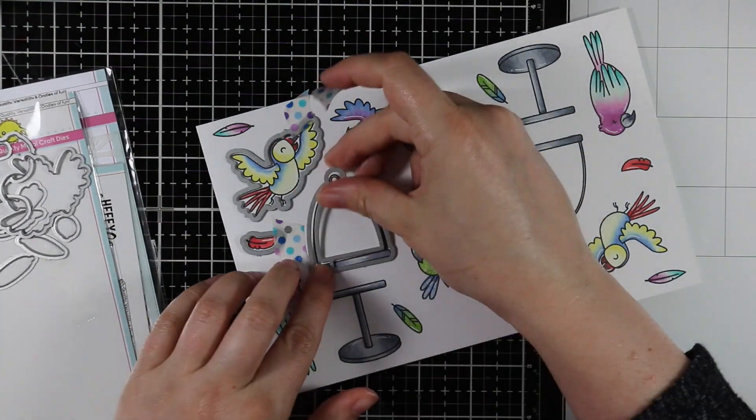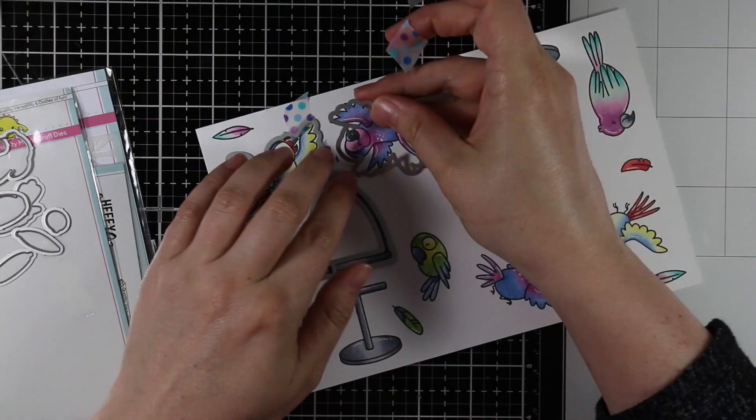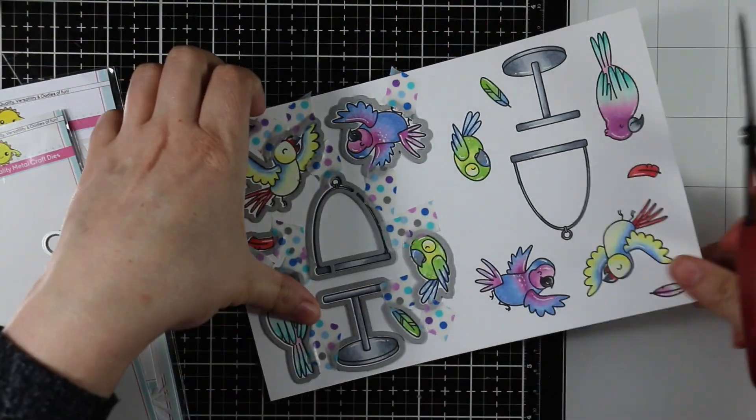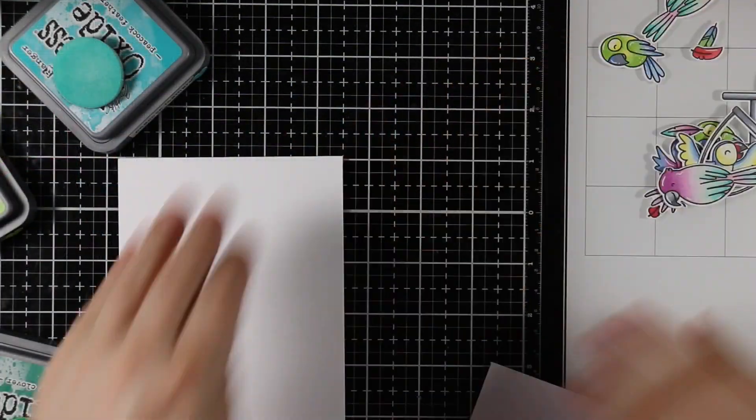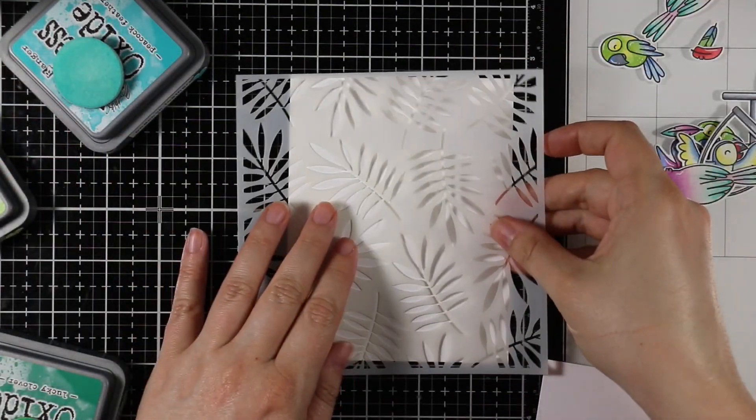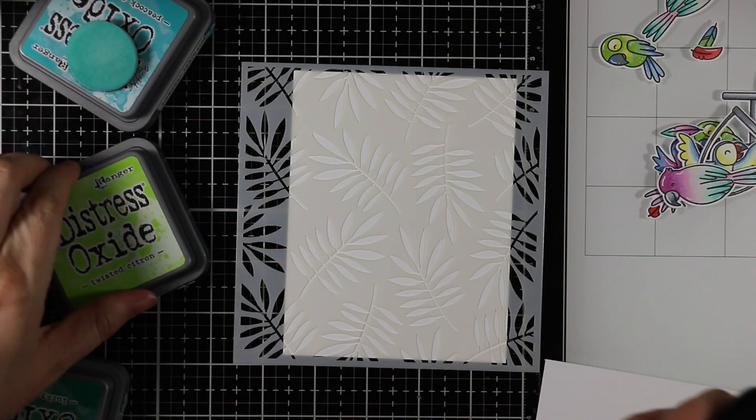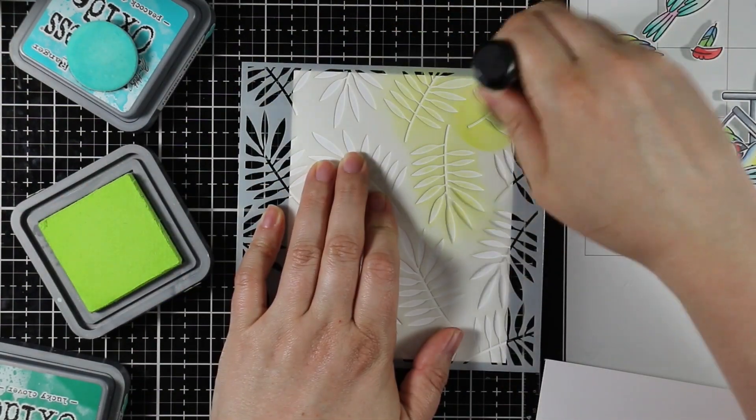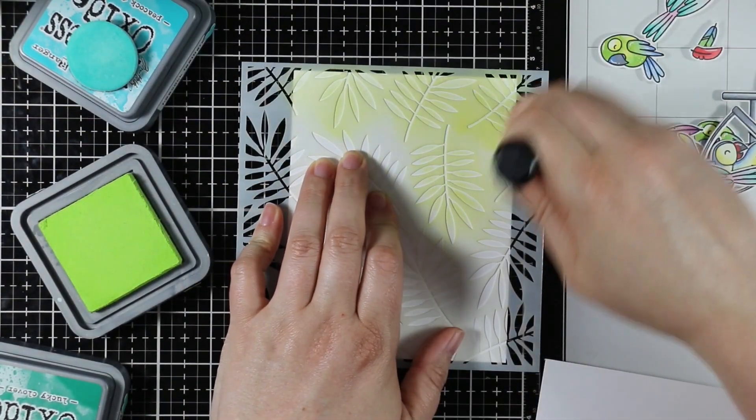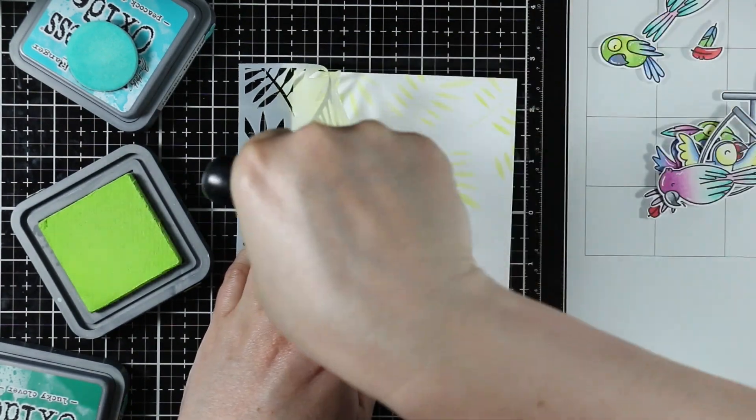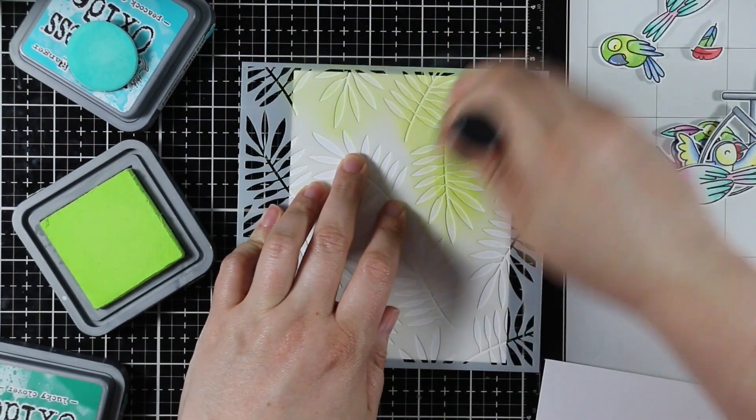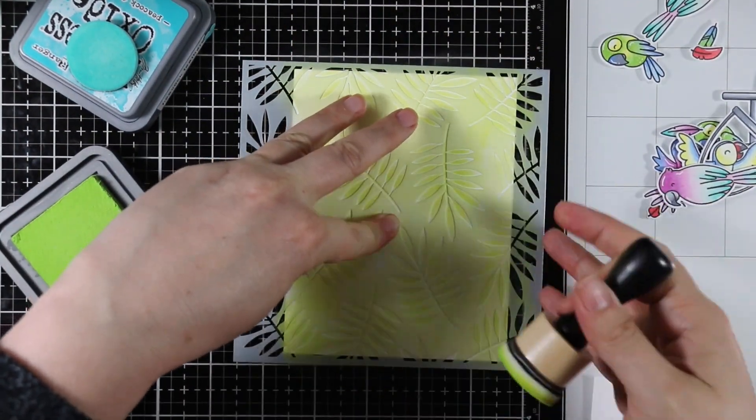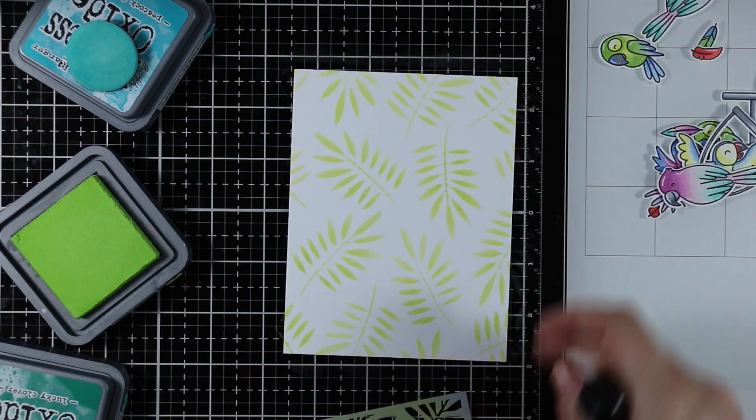I taped it really well because there's nothing worse than having your dies shift when you run them through your die cutting machine. So I die cut all of the little images and then I'm going to set them aside and work on my backgrounds. Since I did double the amount of images I mentally was like, I could do two birds per card. I'm going to do four cards so I have four pieces of white cardstock.